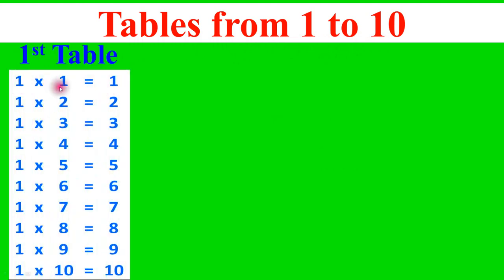First table: 1 times 1 equals 1, 1 times 2 equals 2, 1 times 3 equals 3, 1 times 4 equals 4, 1 times 5 equals 5, 1 times 6 equals 6, 1 times 7 equals 7, 1 times 8 equals 8, 1 times 9 equals 9, 1 times 10 equals 10.